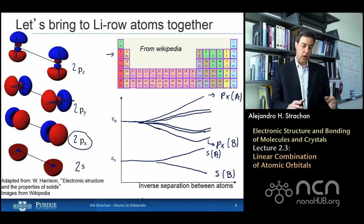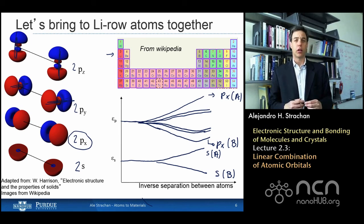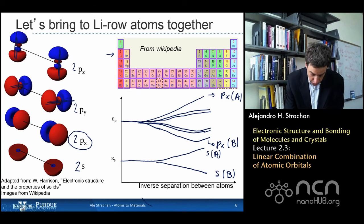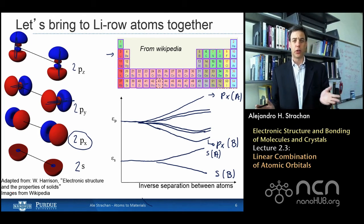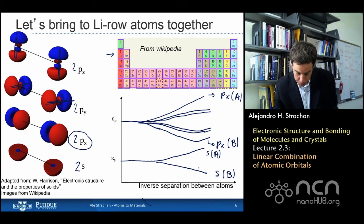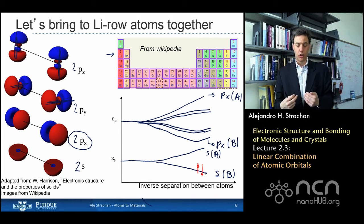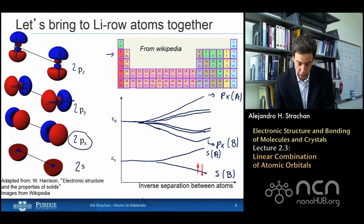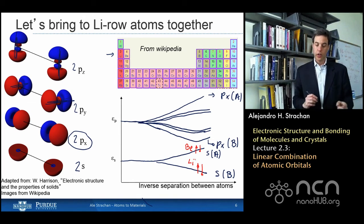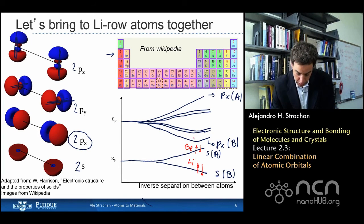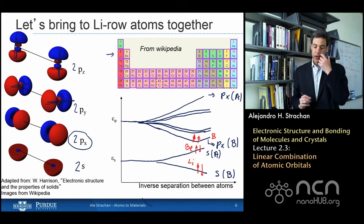I started with four orbitals per atom — eight orbitals total — and end up with eight molecular orbitals from bonding and anti-bonding combinations. Let's now populate these orbitals with electrons. For lithium I have two electrons — two s electrons — so both go into the lowest state, which is the bonding combination of the s orbitals. Then beryllium adds two more electrons. The next element is boron, which has two extra electrons, and then we get to carbon.